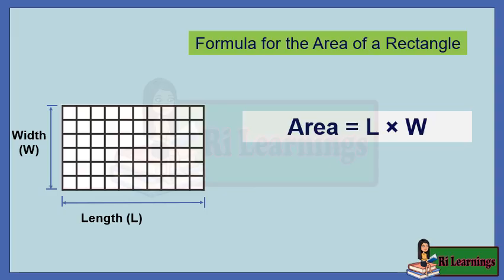The formula for calculating the area of a rectangle is: area equals length times width. In this formula, length refers to the longer side of the rectangle and width refers to the shorter side of the rectangle. Multiplying the length by the width gives you the total area of the rectangle. This formula applies to all rectangles, regardless of their size or proportions.